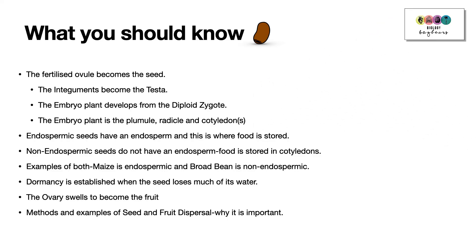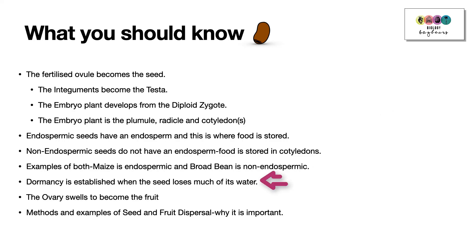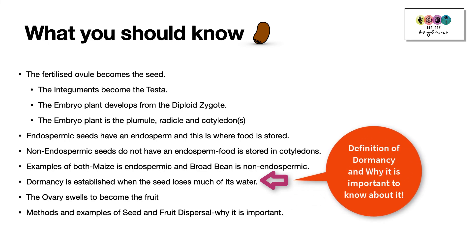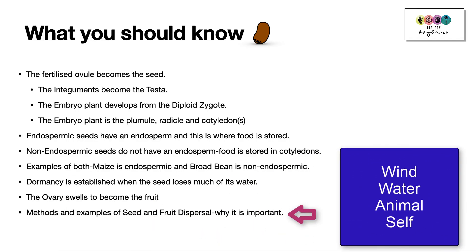Endospermic seeds have an endosperm at maturity — this is where the food is stored. Non-endospermic seeds do not have endosperm at maturity; it has been absorbed and food is stored in the cotyledons. Know that maize is endospermic and broad bean is non-endospermic, and be able to recognise and draw their diagrams. Dormancy is established when the seed loses much of its water content — know the definition and why it matters, as it has come up in exams. Know that the ovary swells to become the fruit, and know methods and examples of seed and fruit dispersal — wind, water, animal, and self — and why they are important.